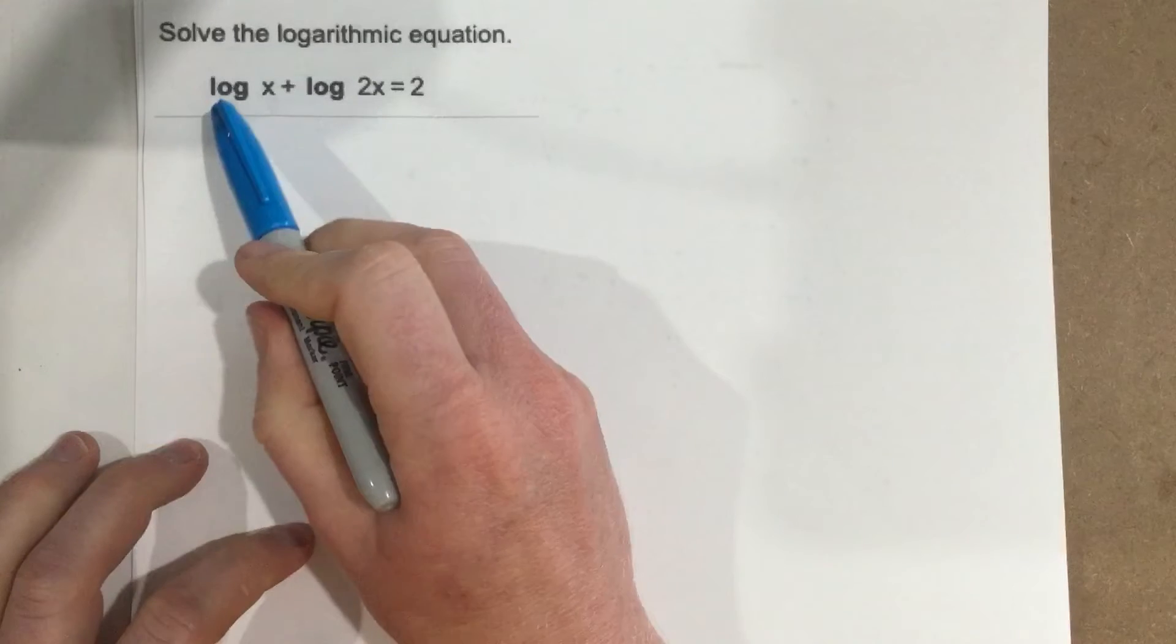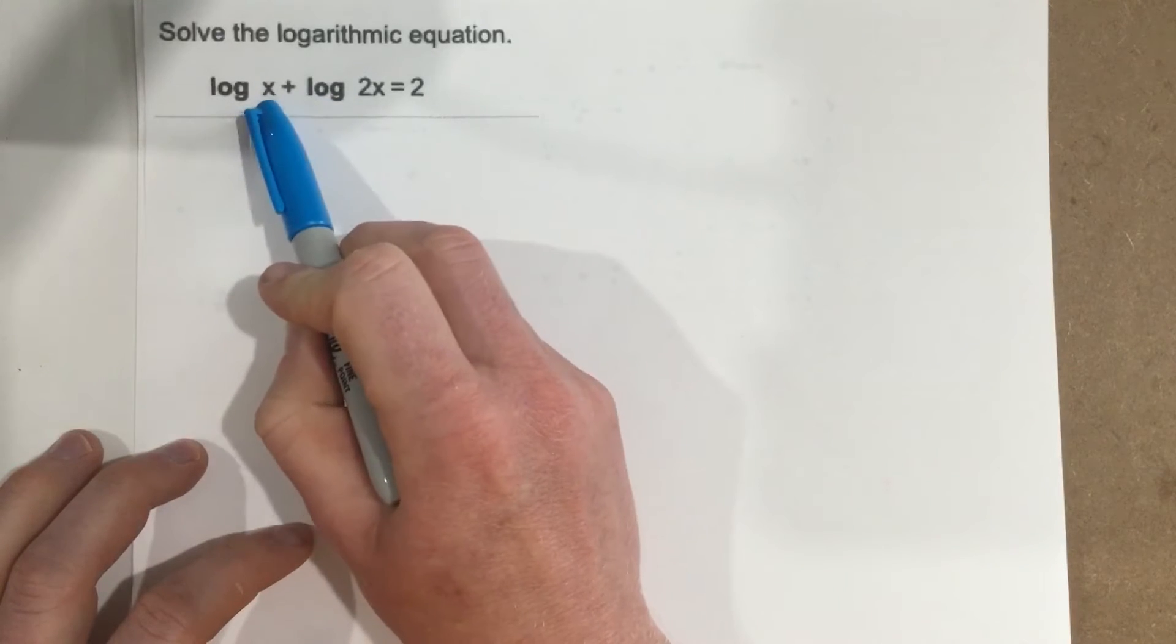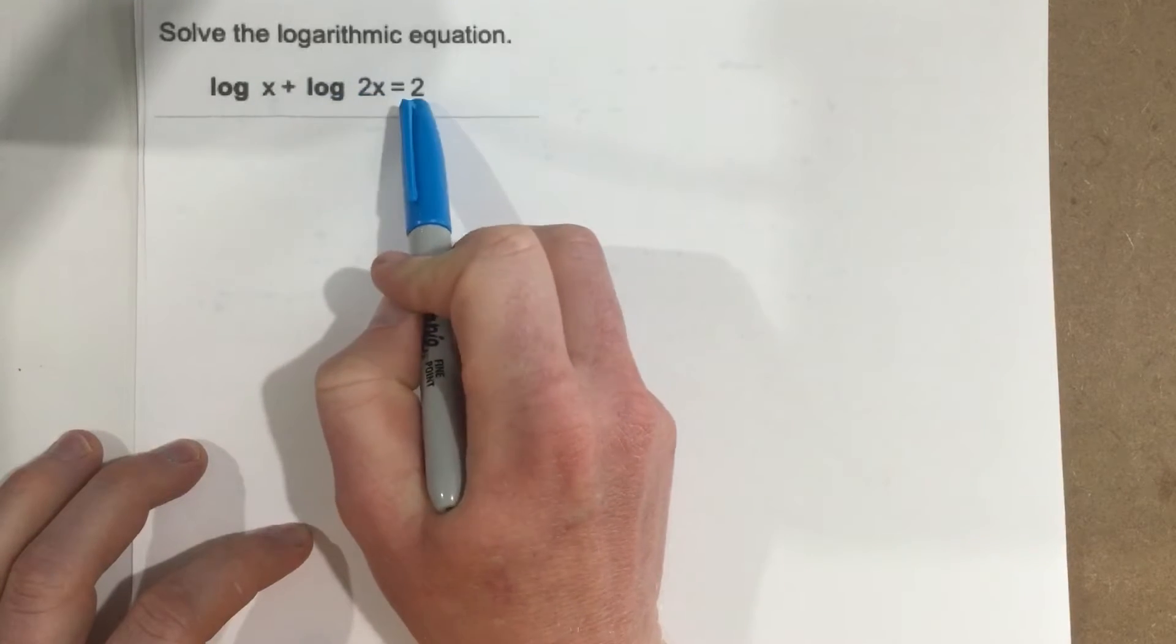Now you'll notice that we're log, and it doesn't give a base, but that means that implies that this is base 10. So log base 10 of x, log base 10 of 2x equals 2.